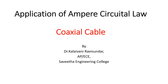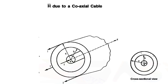Today we will see about the application of Ampere's Circuital Law. Under this application, we are going to see about the coaxial cable. The coaxial cable is a probe we use in our lab. It has an inner conductor which carries the positive current and the outer conductor which carries the negative current.